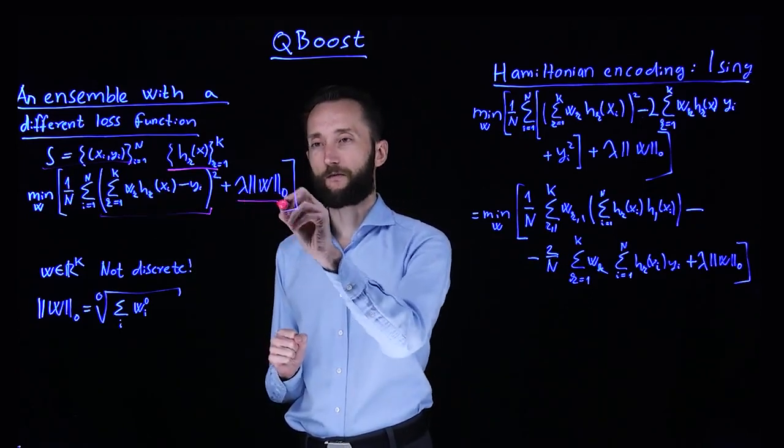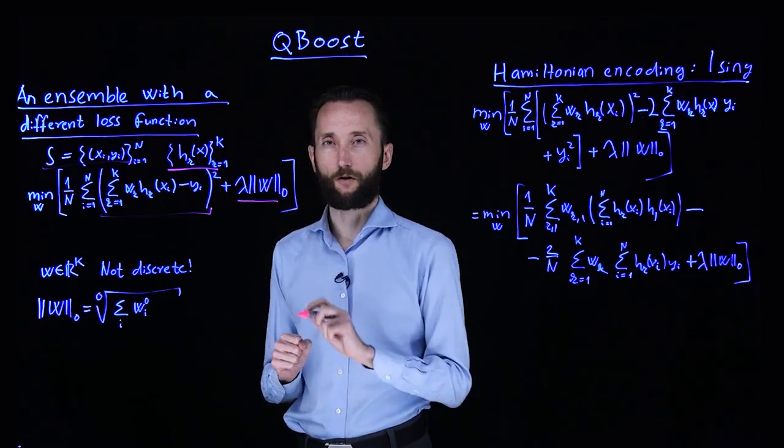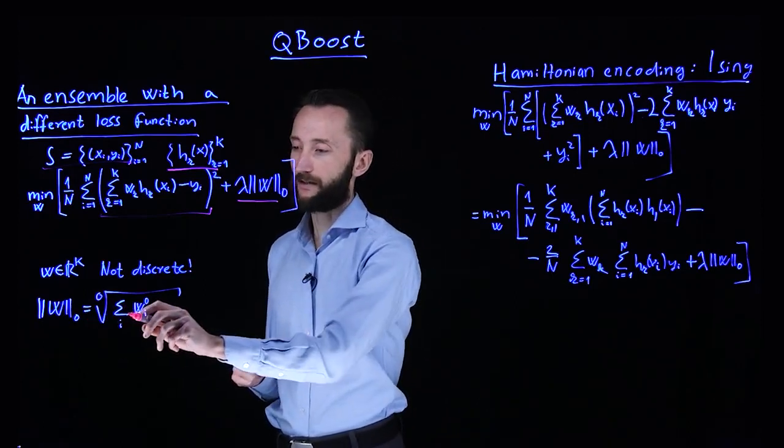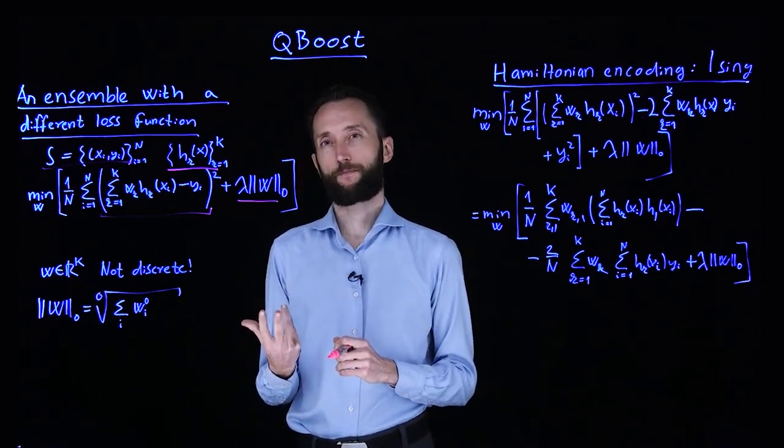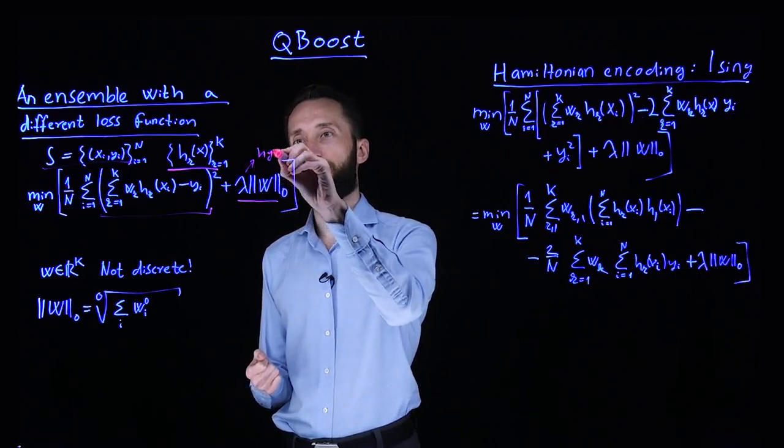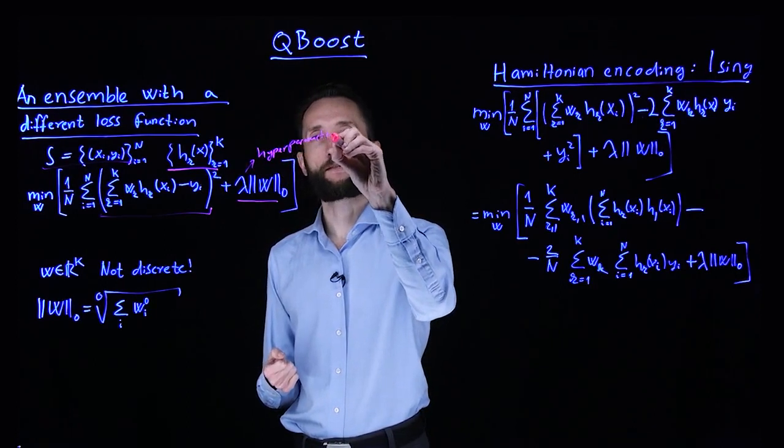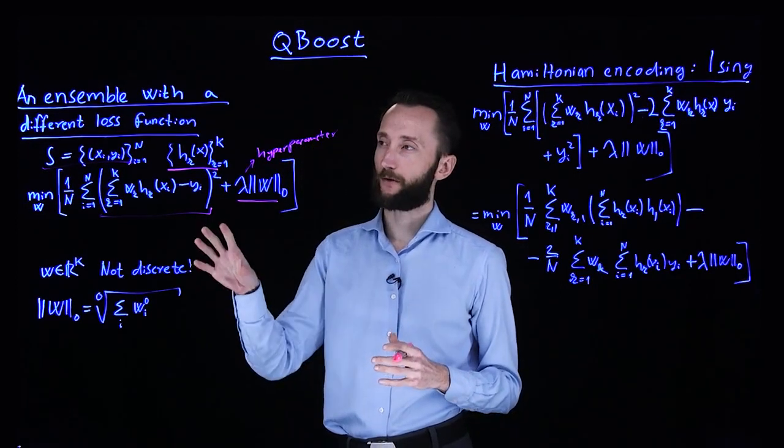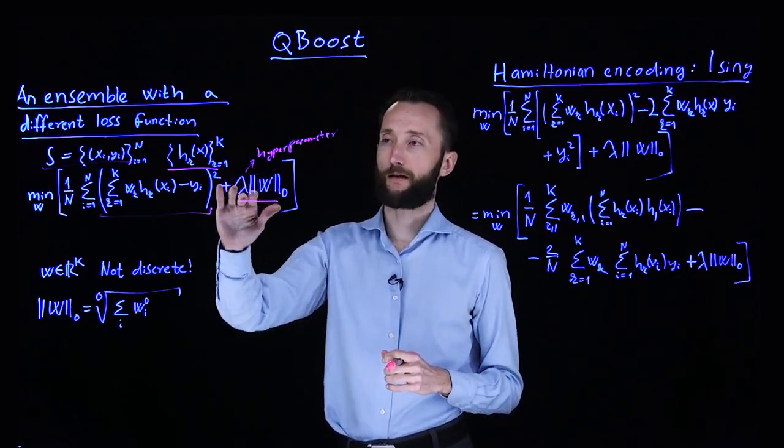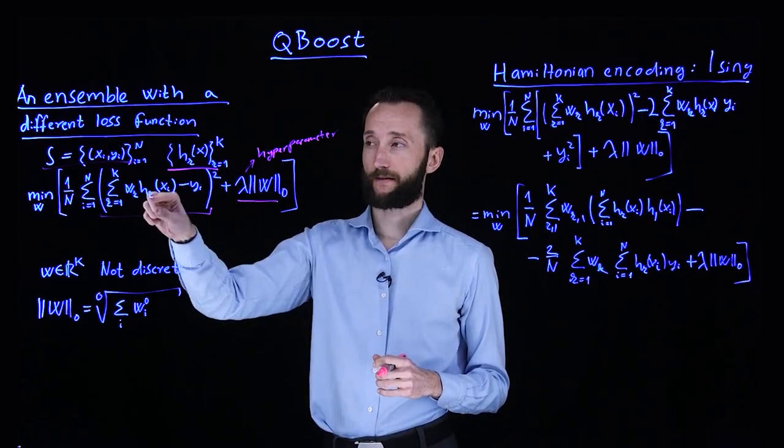And we have a second part here which does a regularization. So we take the zero norm of the w weight vector. So the zero norm just measures how many elements are non-zero. So what it does is if we increase the value of this hyperparameter, then it becomes extremely important to have most of the w entries zero. On the other hand, if we decrease lambda, then there's a lower penalty for including more and more elements in this ensemble.